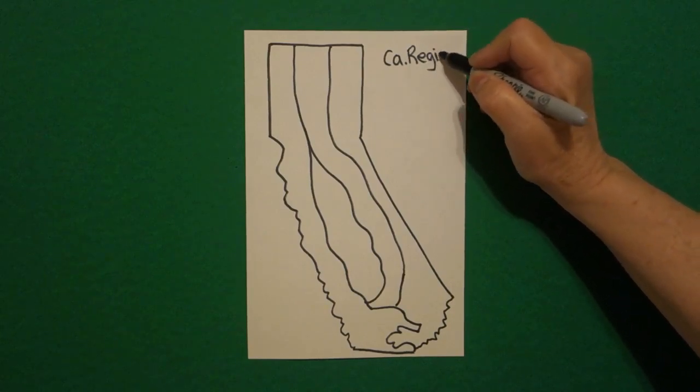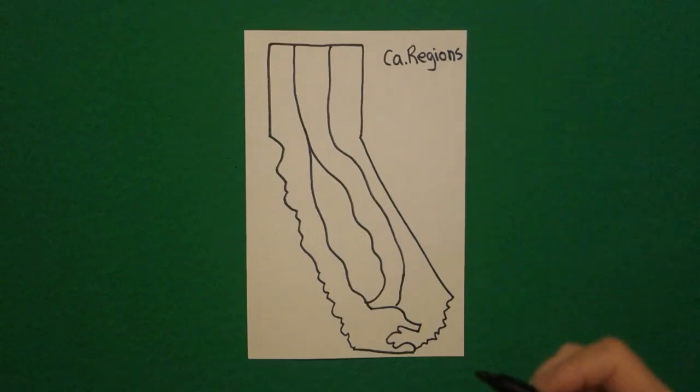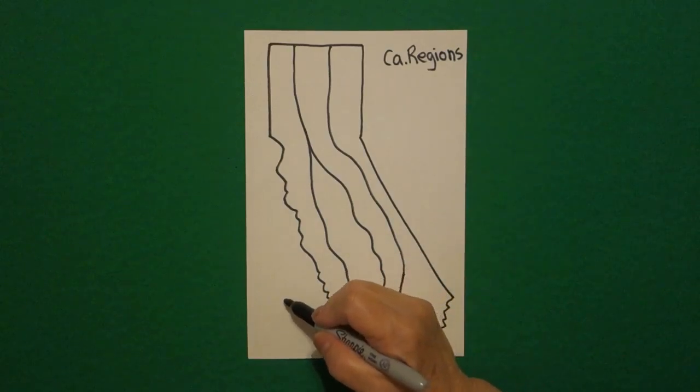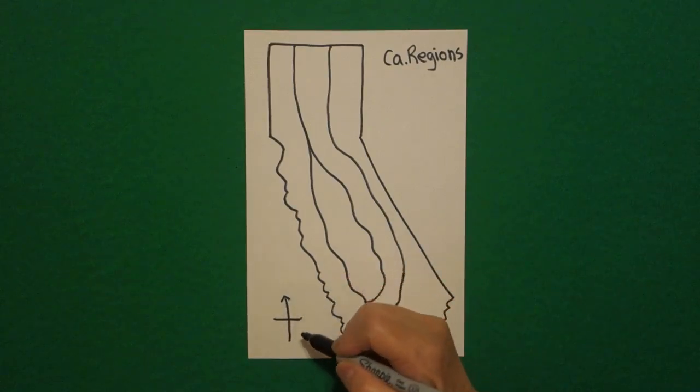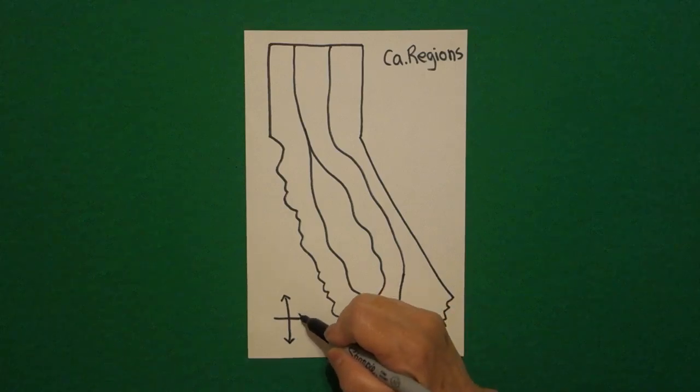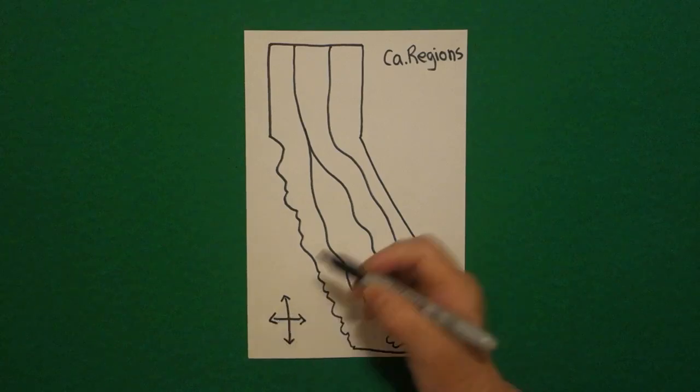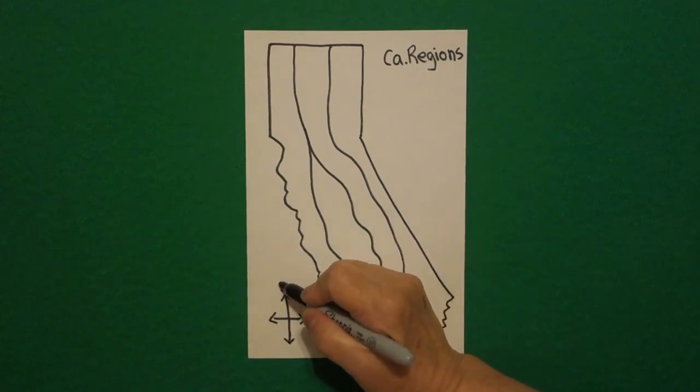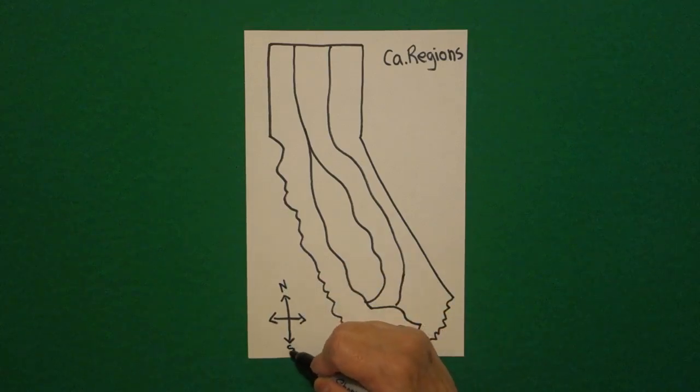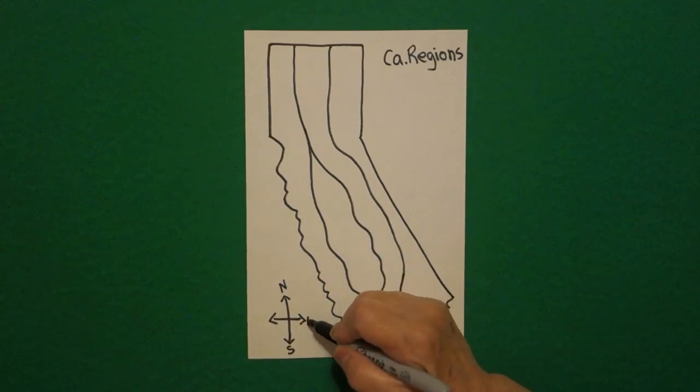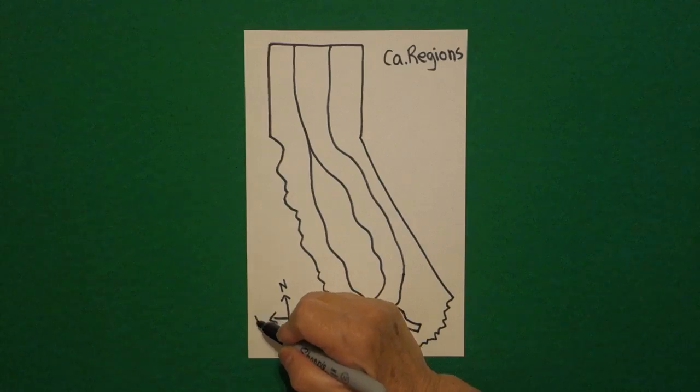And I'm also going to put a real simple compass rose. Straight line, straight line. Arrow top, bottom, side, side. N for north, south, east, west.